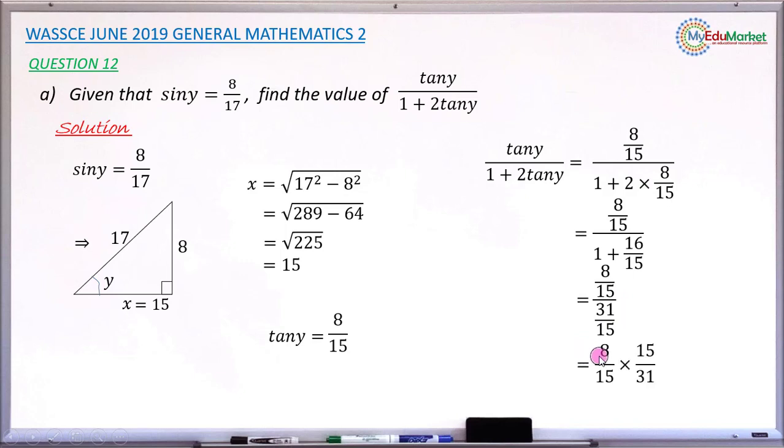So you now have your numerator 8 over 15. Instead of division, you now have multiplication. But instead of 31 over 15, you now have the reverse: 15 over 31. So 15 canceling 15, what you have in the end is 8 over 31. This will now be the value of this tan y over 1 plus 2 tan y.